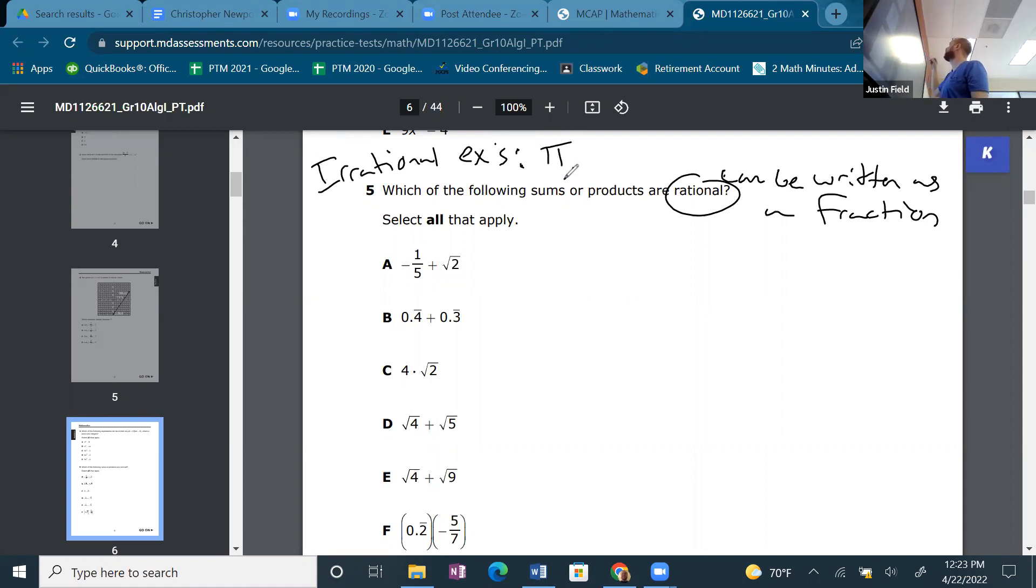And then the opposite is irrational, which cannot be written as a fraction. But instead of just saying that, I'm going to give you some examples. So anything with pi, anything never-ending with no pattern. But beware of 1/7. Go ahead, divide 1 by 7 on your calculator. It looks like it doesn't have a pattern, but it's rational because it can be written as a fraction.